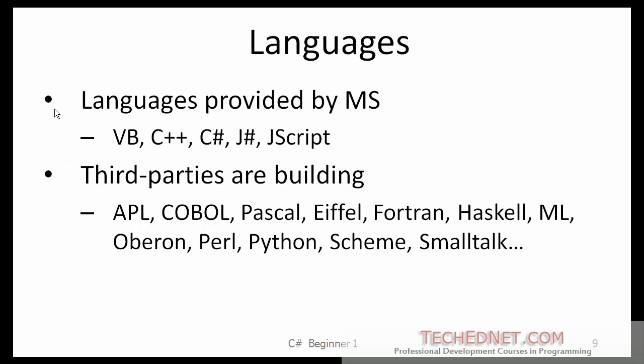The languages supported by .NET are Visual Basic, C++, C#, J#, JScript, and there are several third-party languages available as well — for example, one in Fortran, one based on Python, one based on COBOL and Smalltalk. So you may be able to find the language that you like and program on the .NET platform.